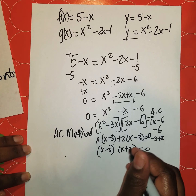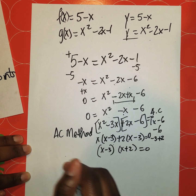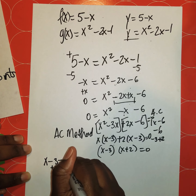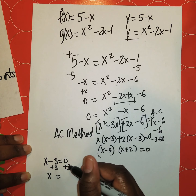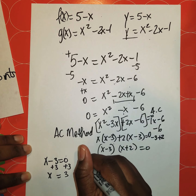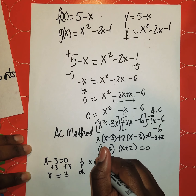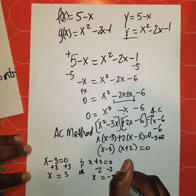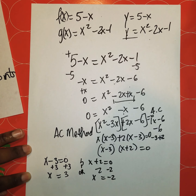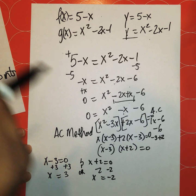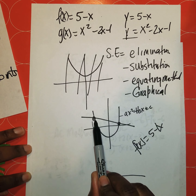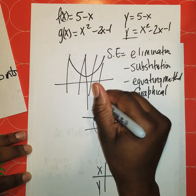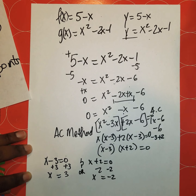We equate each factor to zero. x minus 3 equals zero gives x equals 3. x plus 2 equals zero gives x equals negative 2. We now have two values of x. Since there are two intersection points, each x value will have a corresponding y value, giving us two coordinates.